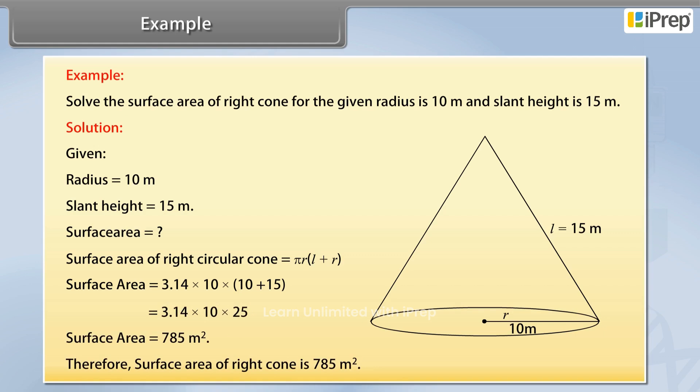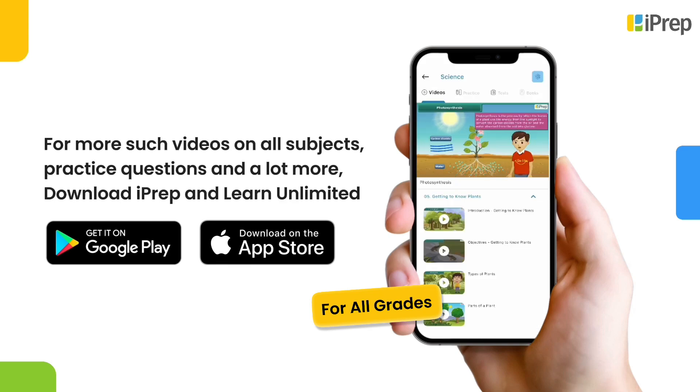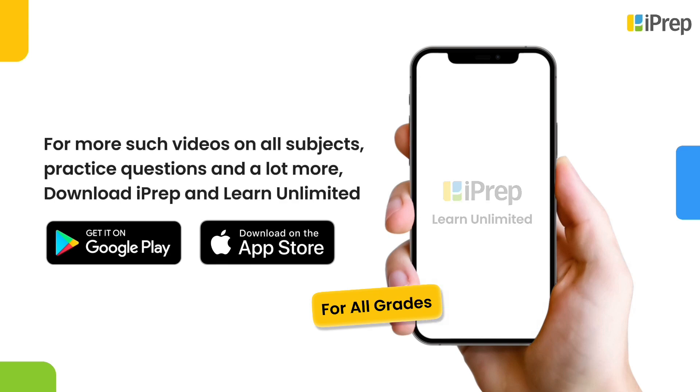Therefore, surface area of right cone is 785 square meter. For more such videos on all subjects, practice questions and a lot more, download iPrep and learn unlimited.